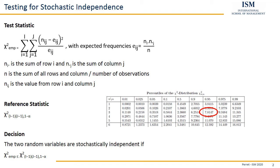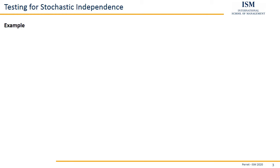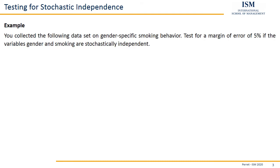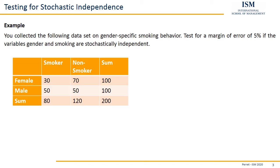Now let's take a look at a practical example. We collected the following data set on gender-specific smoking behavior. We test at a margin of error of five percent whether the variables gender and smoking are stochastically independent — so alpha equals five percent. We have the data with marginal sums already calculated for smoker, non-smoker, female, and male, as well as the overall number of observations of 200. We copy this table for expected frequencies, leaving the inner cells — smoker-female, smoker-male, non-smoker-female, non-smoker-male — blank to be calculated.